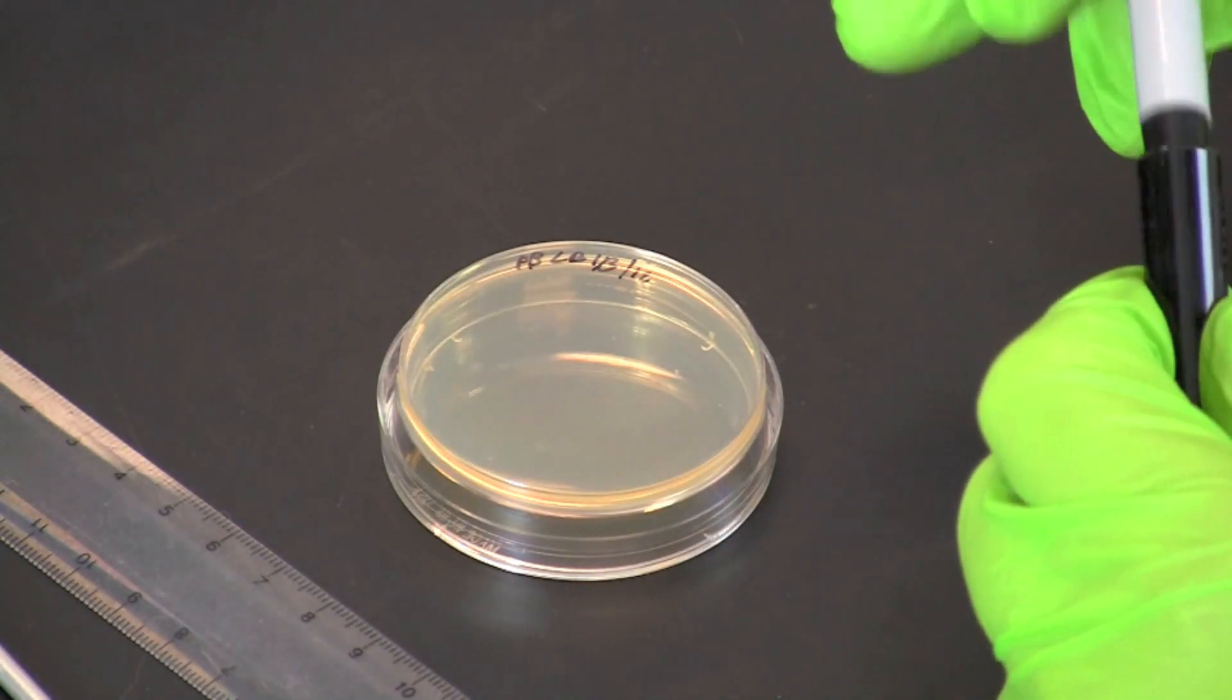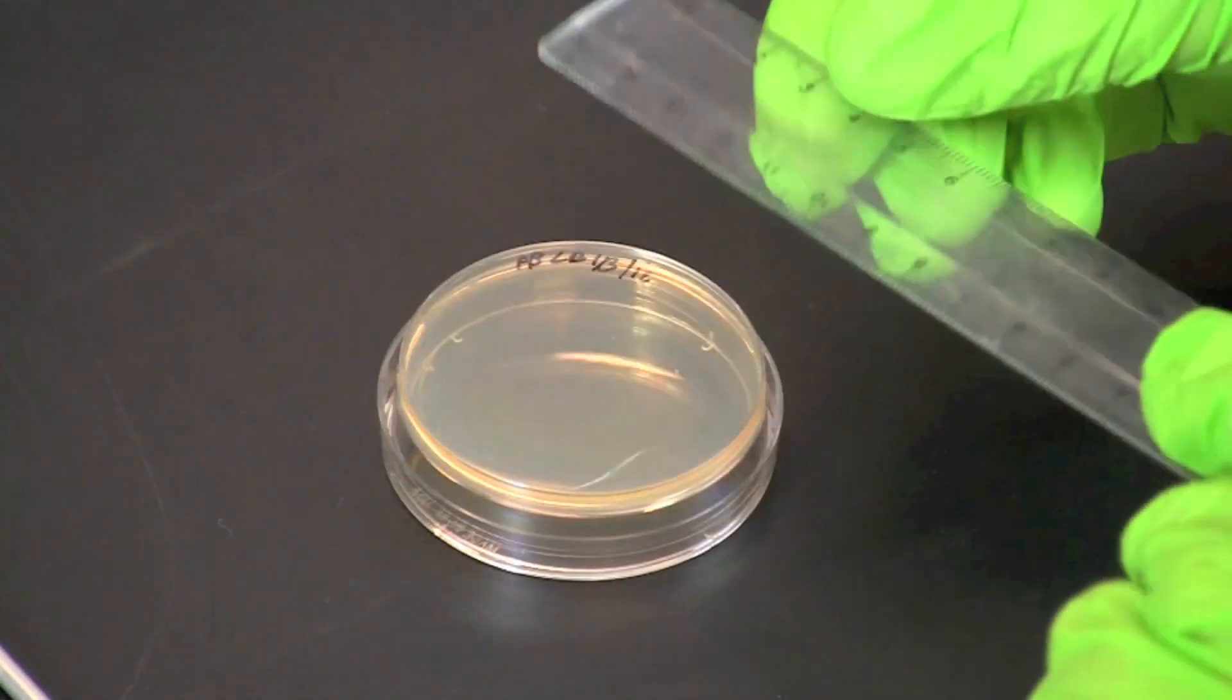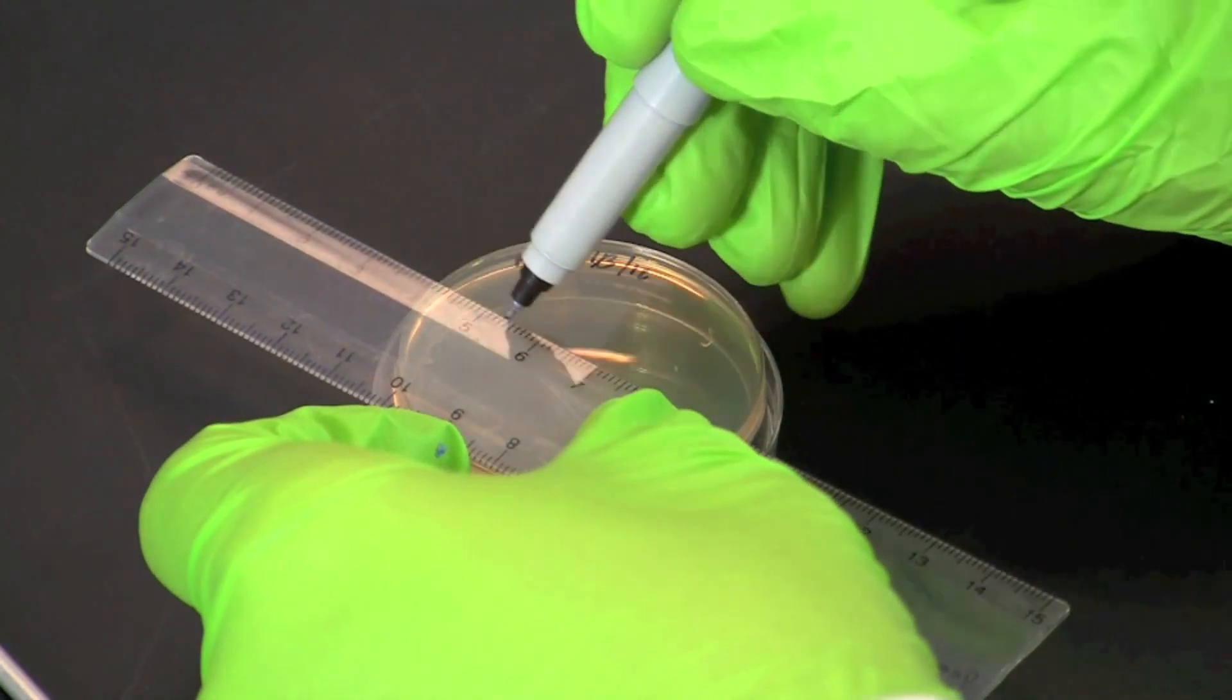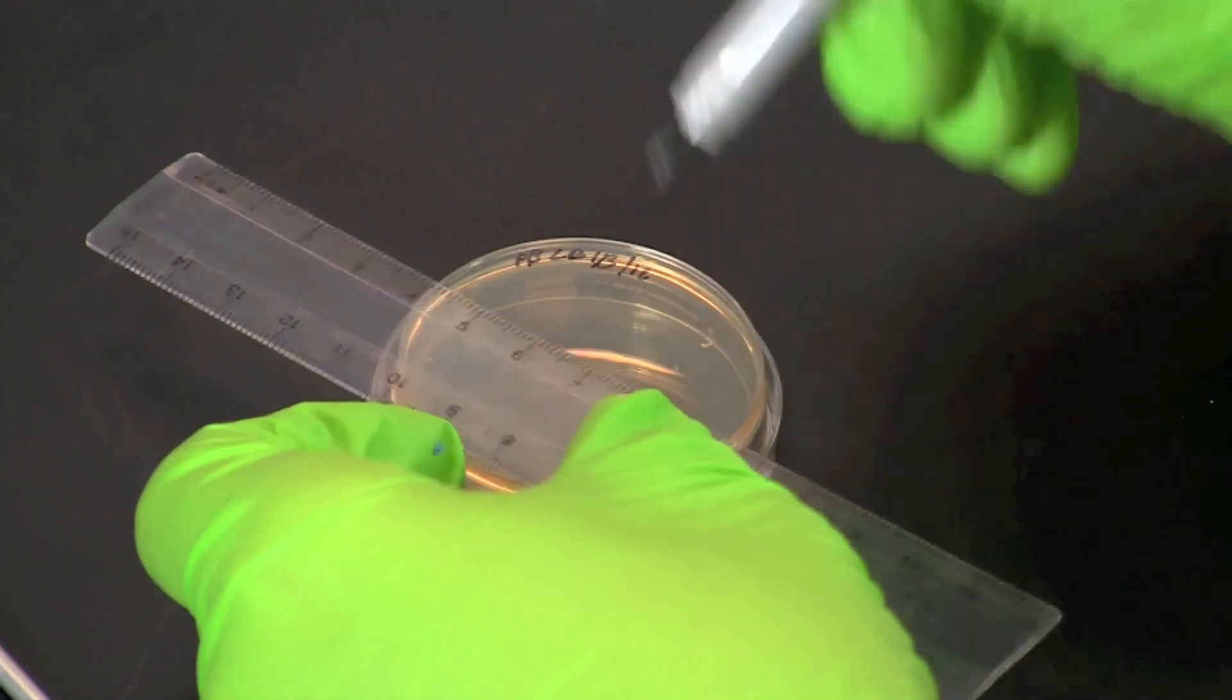Using a laboratory marking pen, divide the bottom of an LB agar plate into four quadrants by drawing two perpendicular lines that form a large X.